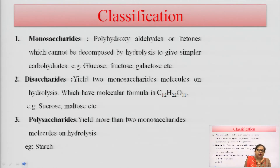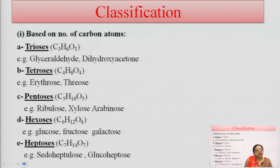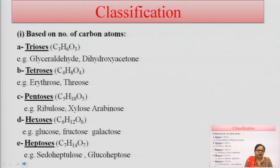The third is polysaccharide, which on hydrolysis gives two or more monosaccharides. An example of polysaccharide is starch. Classification based on carbon atoms: triose has three carbon atoms (glyceraldehyde, dihydroacetone); tetrose has four carbon atoms (erythrose); pentose has five carbon atoms (ribose, xylose); hexose has six carbon atoms (glucose, fructose, galactose); and heptose has seven carbon atoms (sedoheptulose, glucoheptulose).